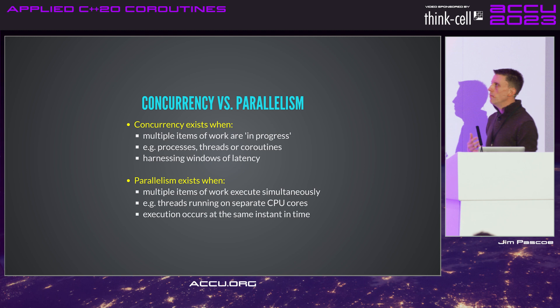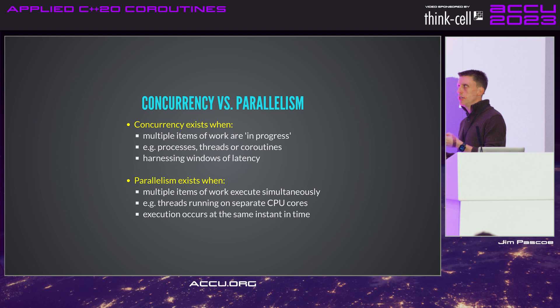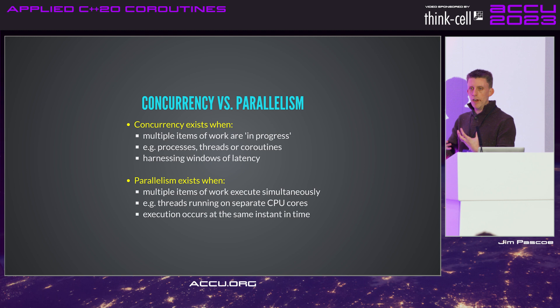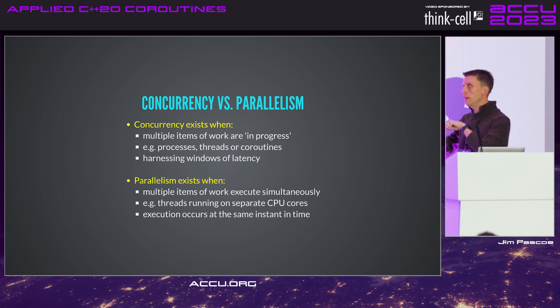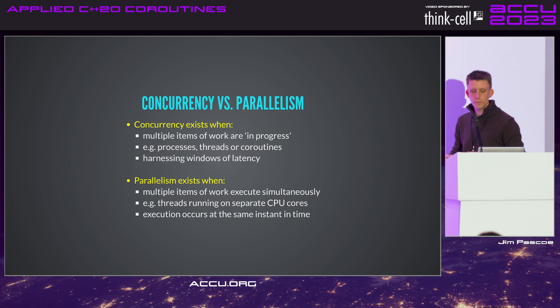Concurrency exists when we've got multiple items of work that are in progress — things like processes, threads, or coroutines. In an embedded context, concurrency is really about harnessing windows of latency. You've got contention for some executor — a thread or processing agent — and when pieces of work are either blocked or have been using that executor too long, they can be swapped out and replaced with other waiting work. You do useful work in that window instead of waiting.